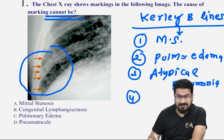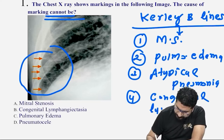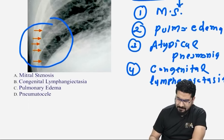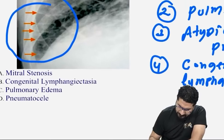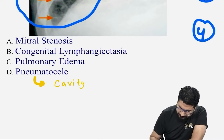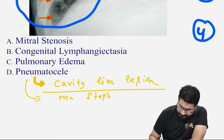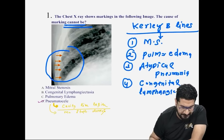You can also see Kerley B lines in congenital lymphangiectasia. So these are the causes. The question asks which is NOT a cause. Pneumatocele is a cavitatory lesion — a cavity caused most commonly by Staph aureus — and is not a cause of Kerley B lines. So the answer is pneumatocele.